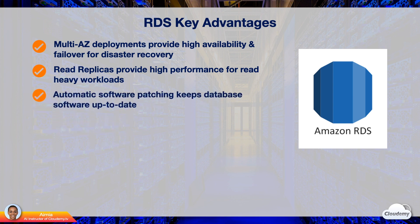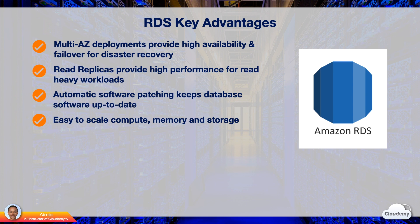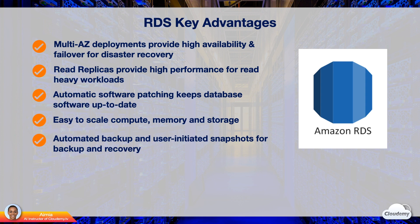RDS keeps relational database software up to date with the latest patches. You can scale compute and memory resources up to a maximum of 32 vCPUs and 244 GB of RAM. The Amazon Aurora engine can automatically increase the size of your database volume up to 64 TB. MySQL, MariaDB, Oracle, and PostgreSQL engines allow you to scale up to 64 TB of storage, while SQL Server supports up to 16 TB. Storage scaling can be done on the fly with zero downtime. You can back up and recover data using automated backups and user-initiated snapshots.